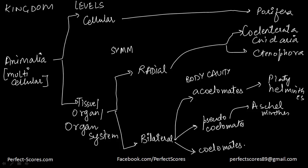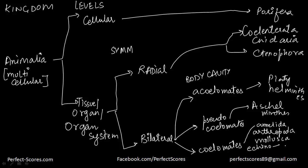Coelomates have six more phyla: Annelida, Arthropoda, Mollusca, Echinodermata, Hemichordata, and Chordata.